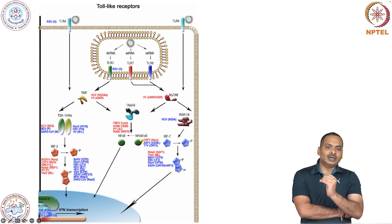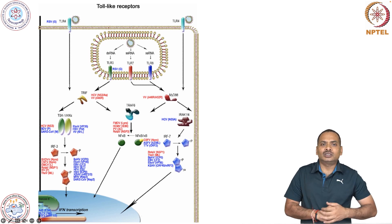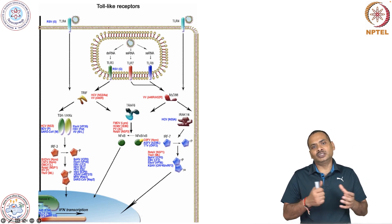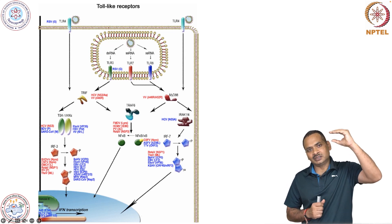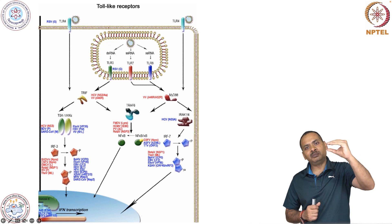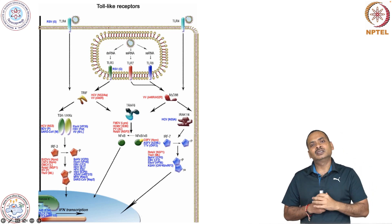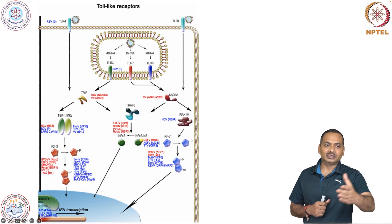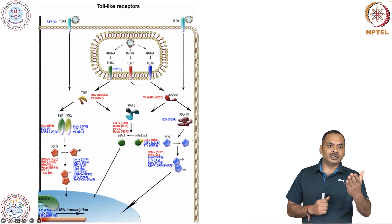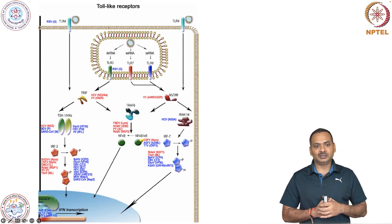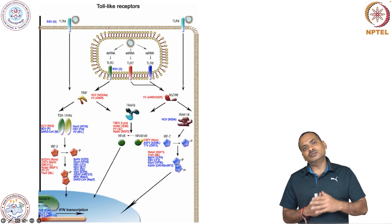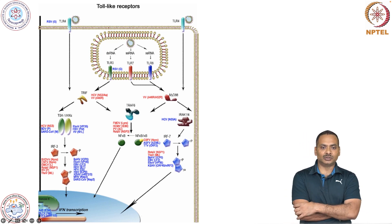These molecules are acting at different stages — it is not that there is only one target. Different viruses have different targets: some target the receptor, some target the adapter, some target the signaling transducer, and some are targeting the transcription factor. Here you can see that IRF3 is targeted by so many proteins from different viruses. The overall aim of the virus is to inhibit the production of type 1 interferon as well as inflammatory cytokines.